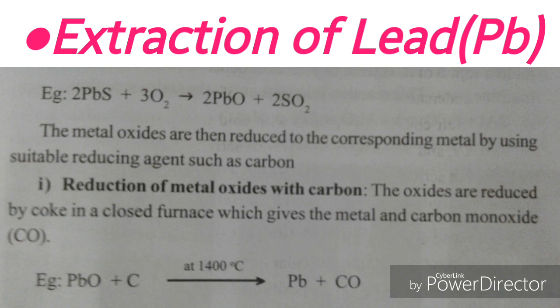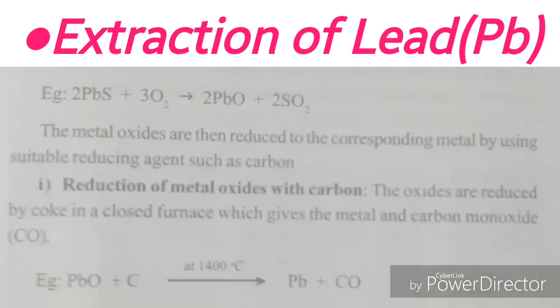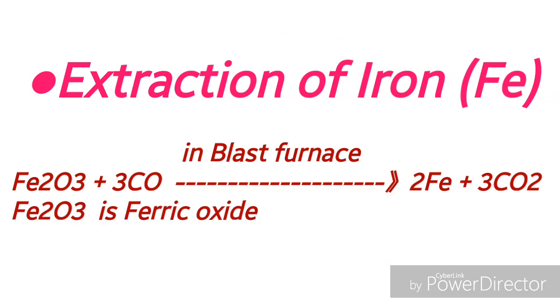Reduction of metal oxide with carbon: the oxides are reduced by coke in a closed furnace, which gives the metal and carbon monoxide (CO). Lead oxide reacts with carbon at 1400 degrees centigrade to form lead metal and carbon monoxide. Carbon monoxide is highly toxic.